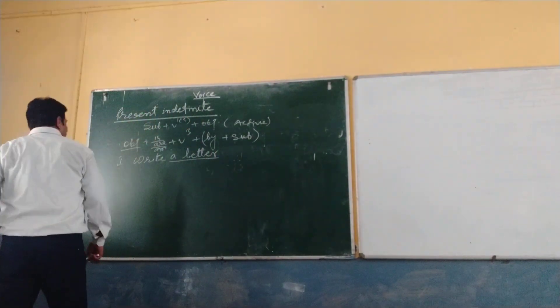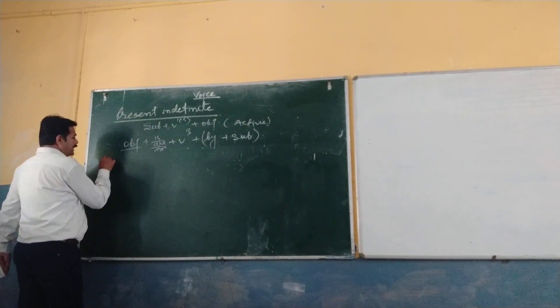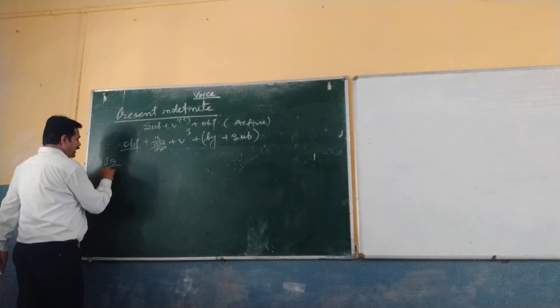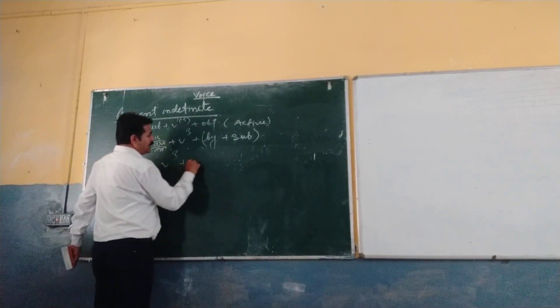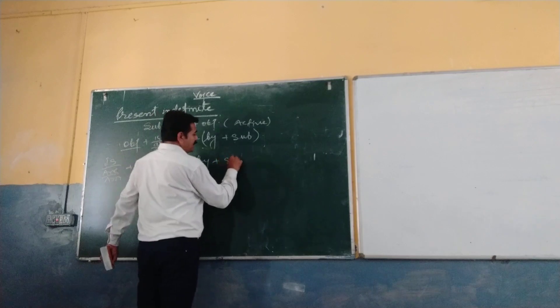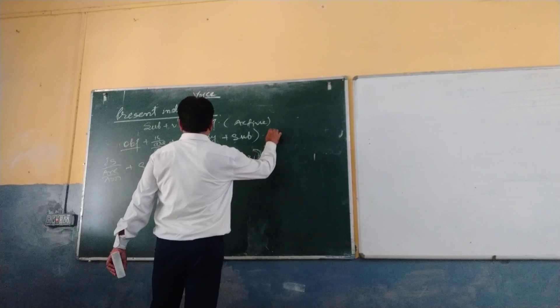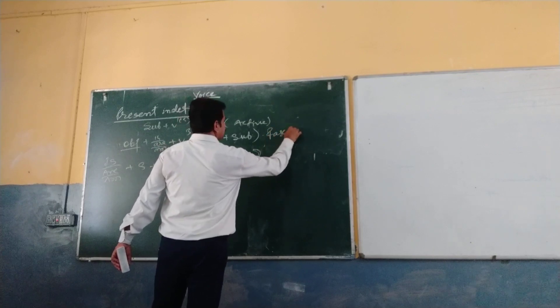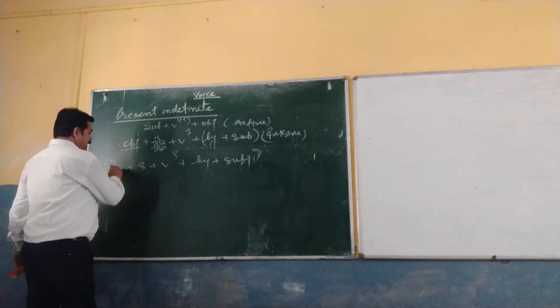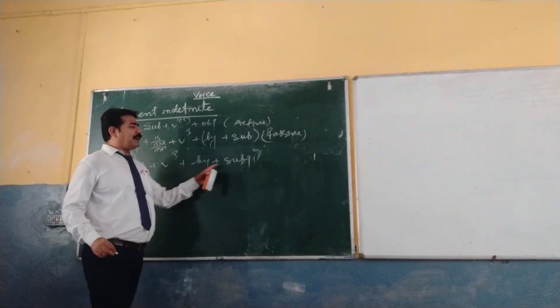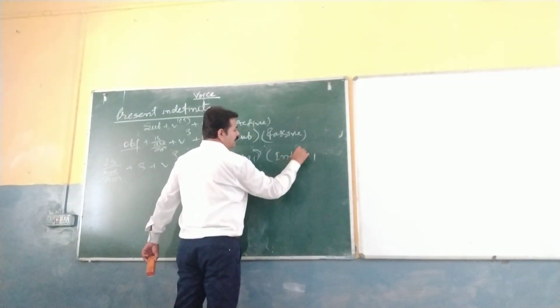Is it clear? Another one. Take another example. This one is presently different. Now for the interrogative sentence, you will write here E is RM plus subject plus V3 plus by plus subject. This is your interrogative. This is passive.